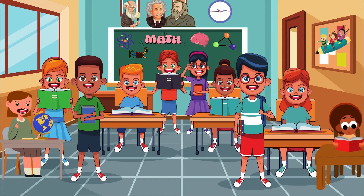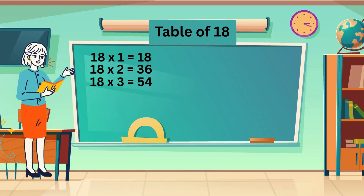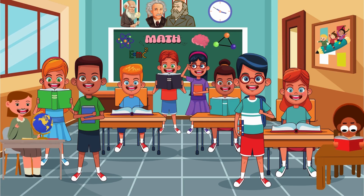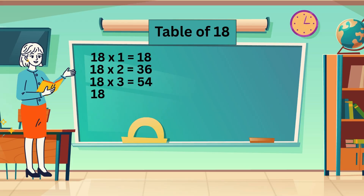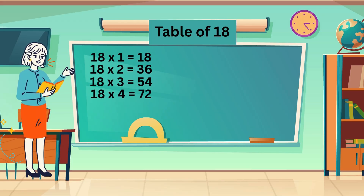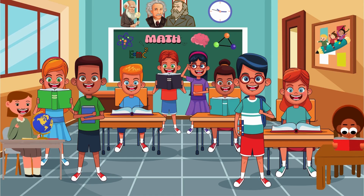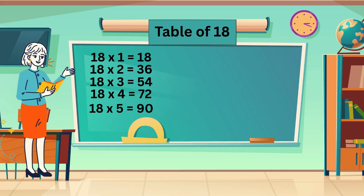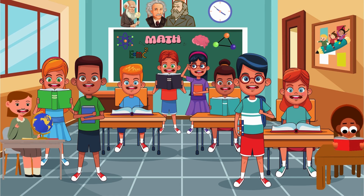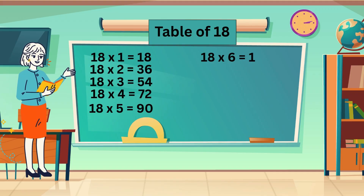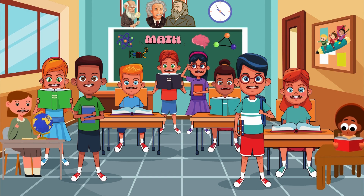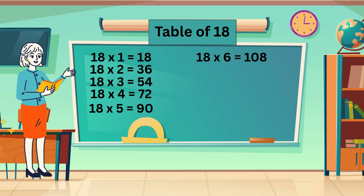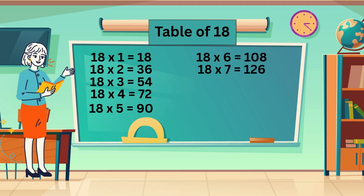Table of 18. 18 ones are 18. 18 twos are 36. 18 threes are 54. 18 fours are 72. 18 fives are 90. 18 sixes are 108.